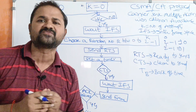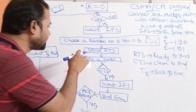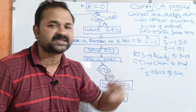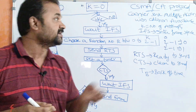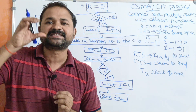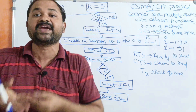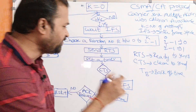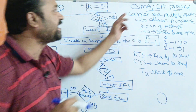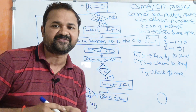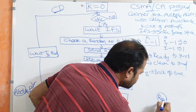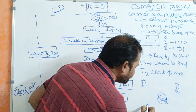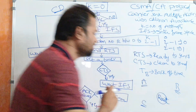Next, the station sends an RTS signal — RTS means Ready To Send. CSMA/CA is mainly used in Wi-Fi wireless LAN. Consider a setup where we have a router, and stations A, B, C, and D connected to it.